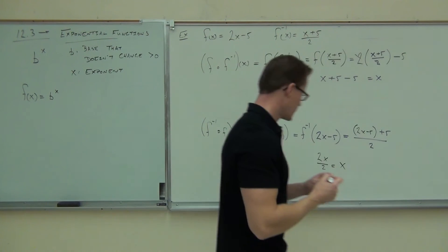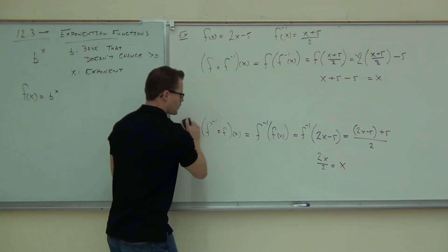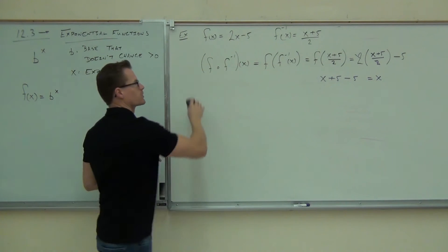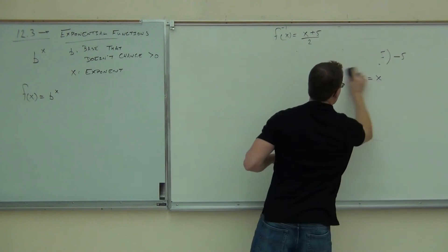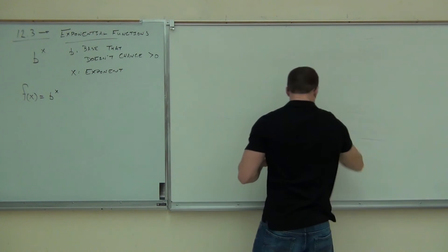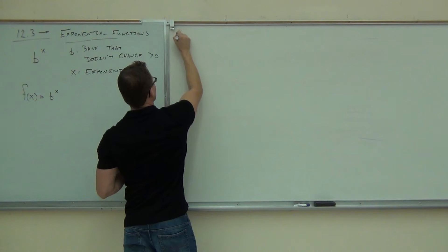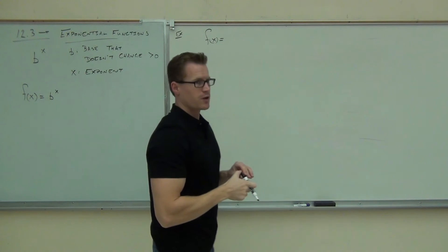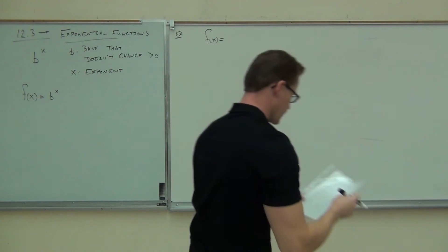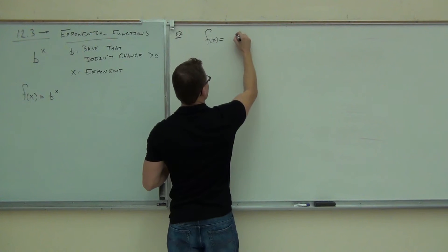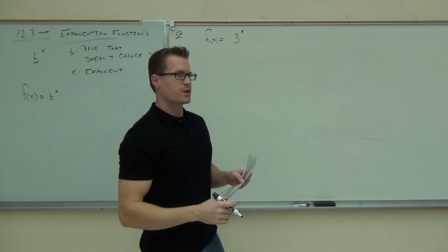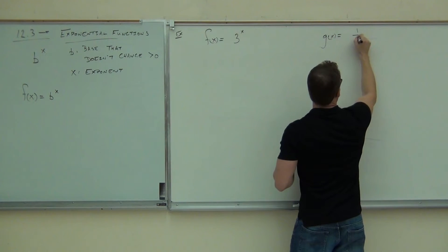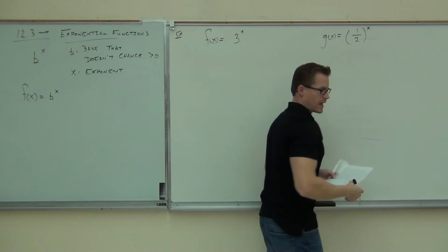I'd like to show you a couple of graphs to see the difference between these things. We're going to find out how exponentials actually look graphically. I'm going to graph two functions on two sets of axes: three to the X, and one-half to the X.